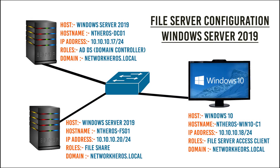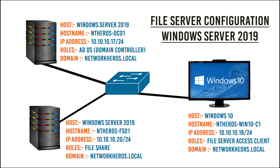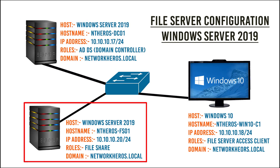The lab scenario will be like this. I have a Windows Server with the host name antiheroes-dc01 with the IP address 10.10.10.17/24 that is acting as a domain controller. The Active Directory Domain Services and DNS roles are installed and configured on the server, and the domain is networkheroes.local. Another host I have for this lab is Windows Server 2019 with the host name antiheroes-fs01 with the IP address 10.10.10.20/24, and it will act as a file sharing server in the domain networkheroes.local.